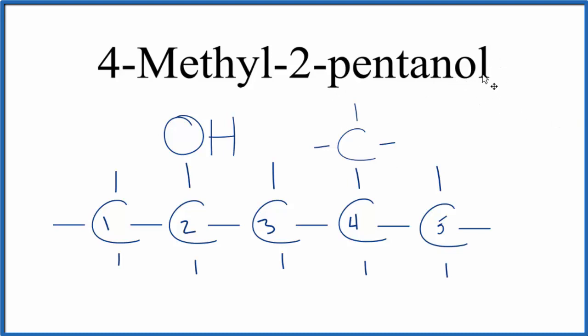This is the structure for 4-methyl-2-pentanol. We have our alcohol because of the OL. We know we've got five carbons and the alcohol goes on the second carbon. On the fourth carbon here, that's where we put our methyl group. So that's the structure for 4-methyl-2-pentanol.